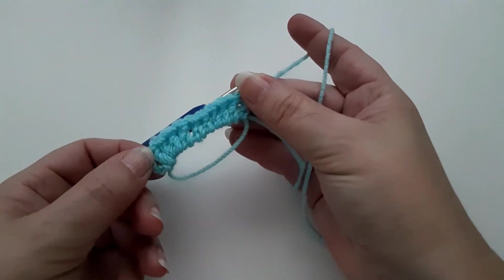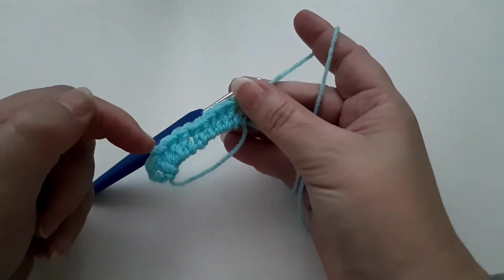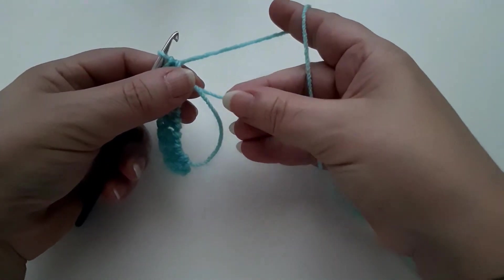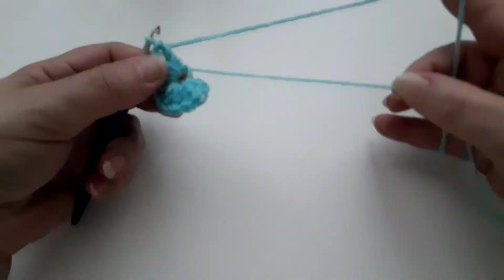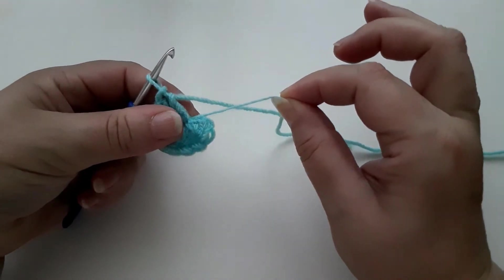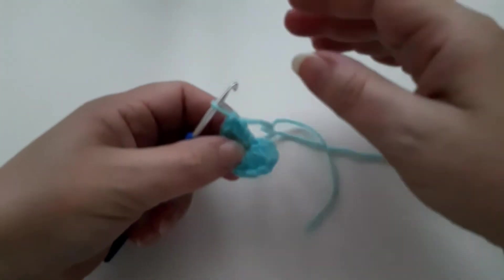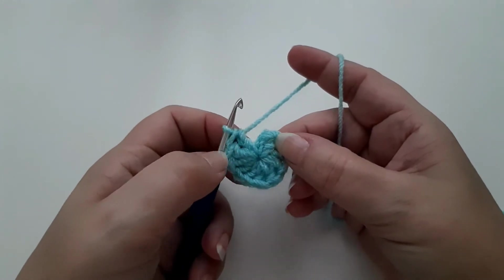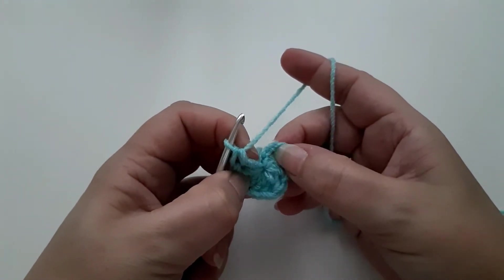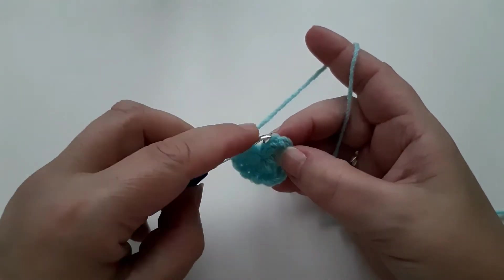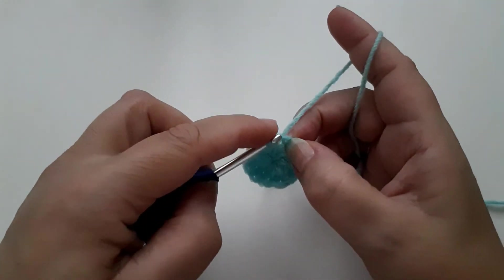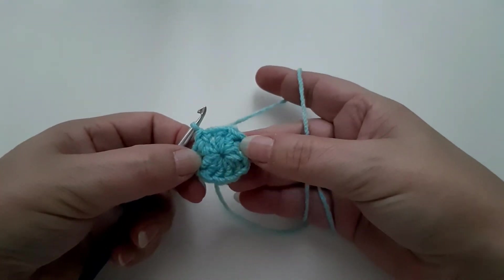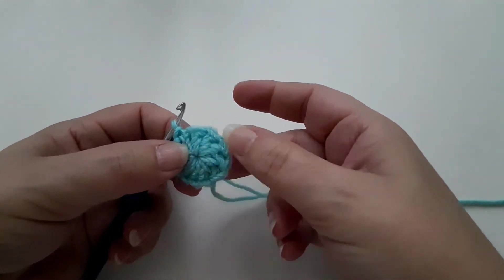Okay, so what I've done here inside my magic ring I have my chain of three and then I have 10 double crochets going into the chain. So I'm going to pull the tail because I want to make this ring smaller and you can pull that quite tightly. And then I'm going to join up this circle so I'm going to join into the top one, two, three of the three chain with a slip stitch.